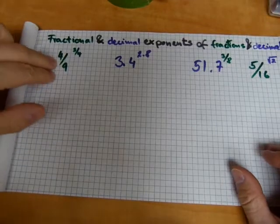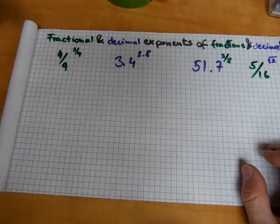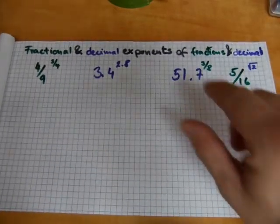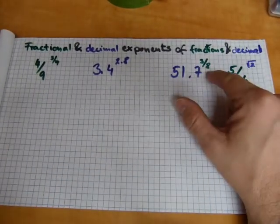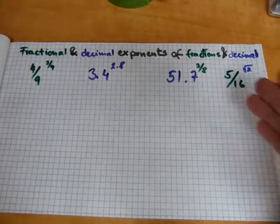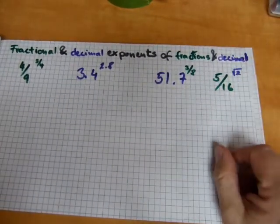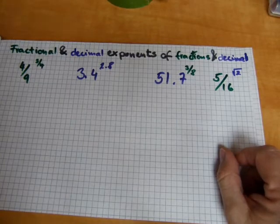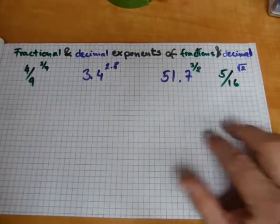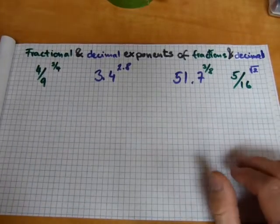Here I wrote 4 ninths to the power of 3 quarters. This kind of thing exists. 3 quarters to the power of 2.8, or sometimes decimals have fractional exponents. 51.7 to the power of 3 eighths, sometimes fractions have decimal exponents. 5 sixteenths to the power of square root 2. And sometimes there's interesting combinations.